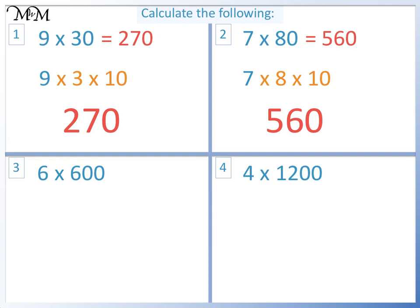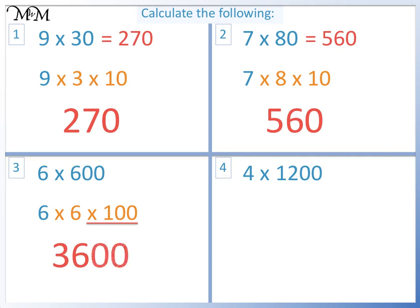This is the same as 6 times 6 times 100. 6 times 6 equals 36, times 100 equals 3600. So 6 times 600 equals 3600.